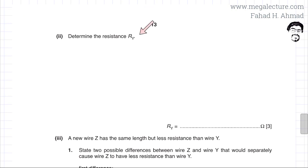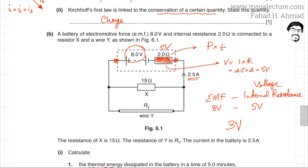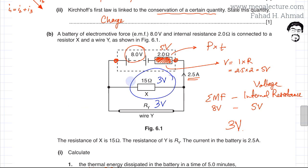Now resistance R_Y needs to be determined. Since the terminal voltage is 3 volts and the two resistances are in parallel — meaning the voltage across each is the same — 3 volts appears across the 15 ohm resistor. The current through the 15 ohm resistor is I = V/R = 3/15 = 0.2 amperes.